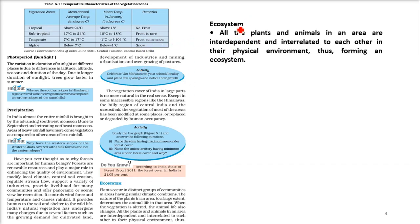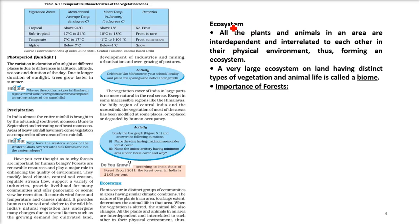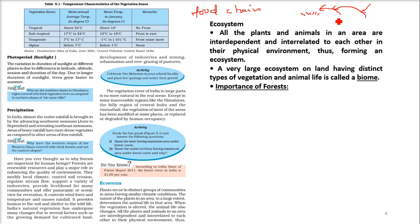Ecosystem means all the plants and animals in an area are interdependent. There is a food chain — a plant or tree exists, a herbivore animal eats it, a carnivore eats that herbivore. When they die, they give manure to the soil and the plant grows again. This interrelated interdependency between plants and animals along with the environment forms an ecosystem.